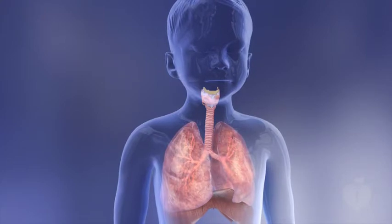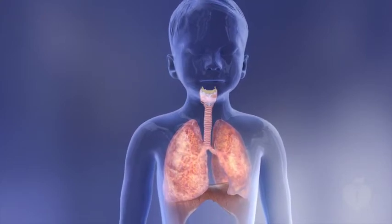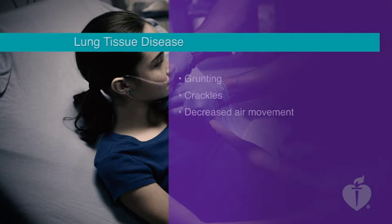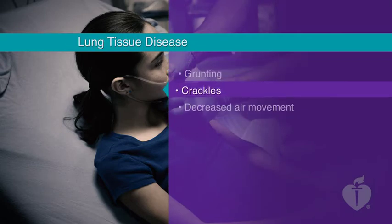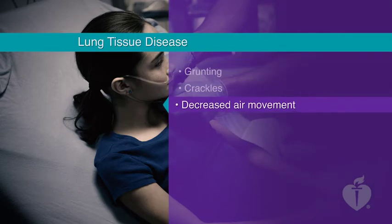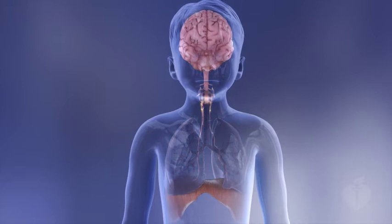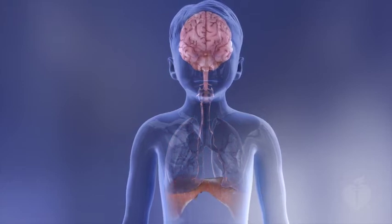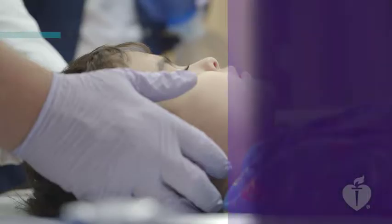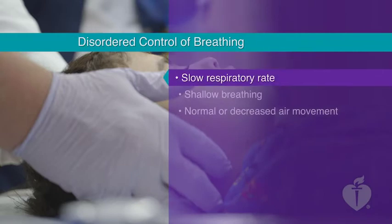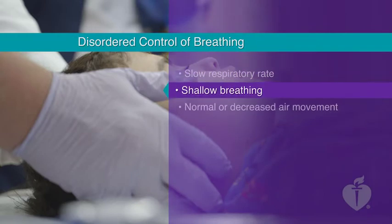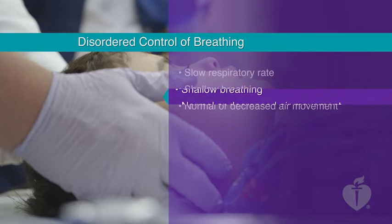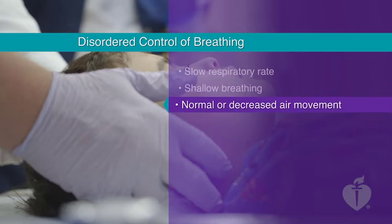A child with lung tissue disease, such as pneumonia, demonstrates increased respiratory rate and effort that may include grunting. Crackles and decreased air movement may be present. A child with disordered control of breathing, such as a child with brain injury or drug overdose, may have an irregular breathing pattern. The respiratory rate is often slow and breathing may be shallow with inadequate respiratory effort. Air movement may be normal or decreased, and the child may have poor muscle tone or altered mental state, causing upper airway obstruction.